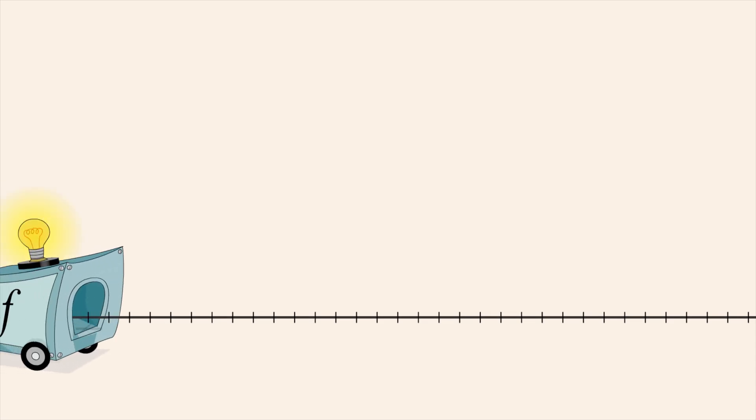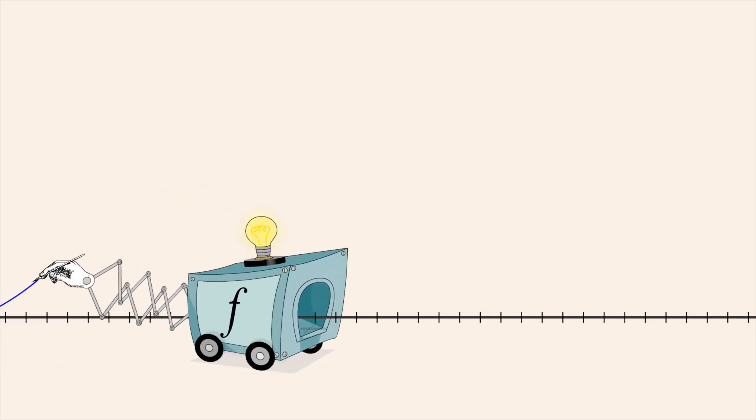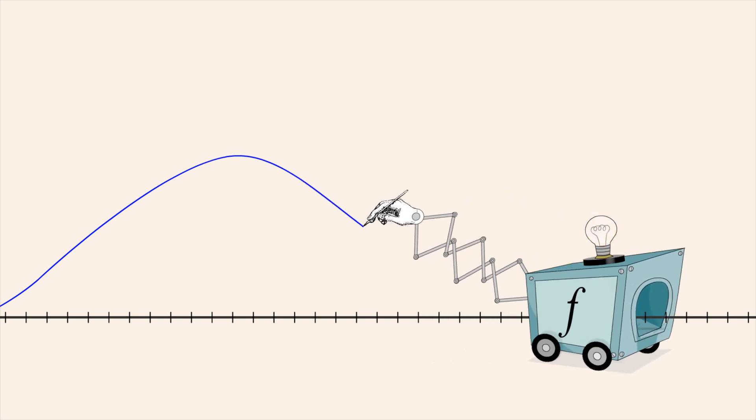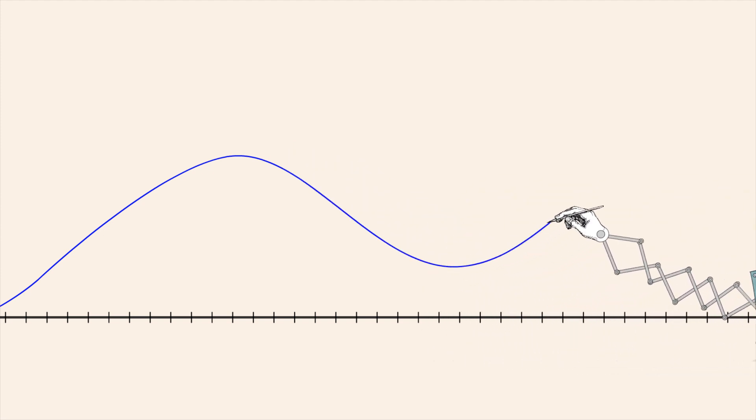When the domain of a function is the entire set of real numbers, every position on the x-axis will be associated with some value of y which determines the height of the graph above or below that position.